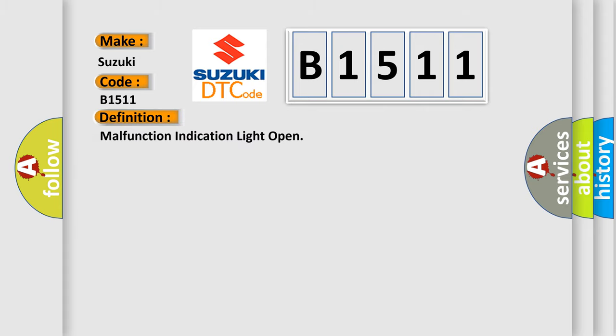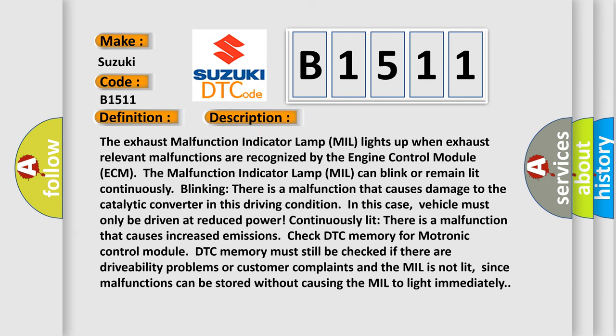The basic definition is: Malfunction Indication Light Open. The exhaust malfunction indicator lamp (MIL) lights up when exhaust-relevant malfunctions are recognized by the engine control module (ECM). The malfunction indicator lamp MIL can blink or remain lit continuously.